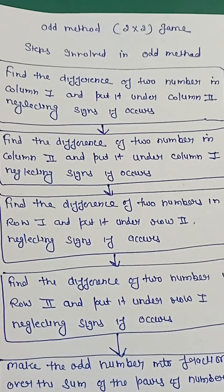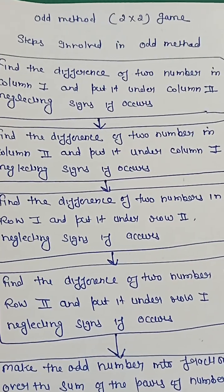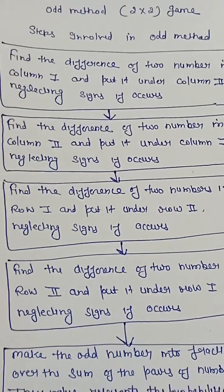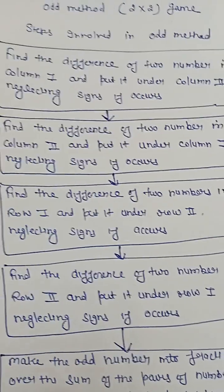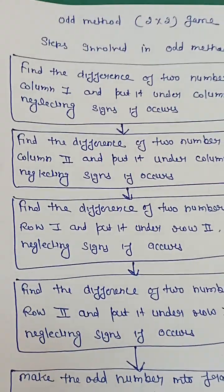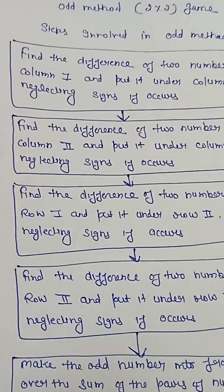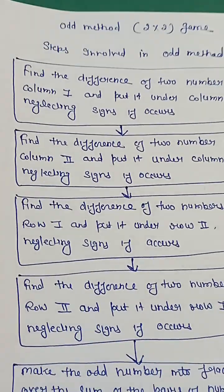The odd method is used only in the case a game with 2x2 matrix without saddle point. When there is no saddle point and the table is in 2x2 form, meaning 2 rows and 2 columns, we will apply odd method.